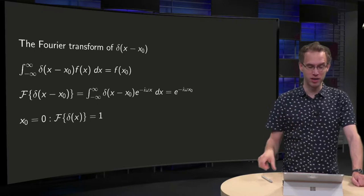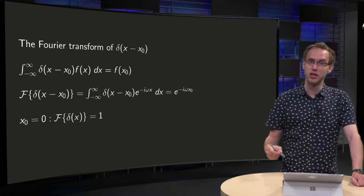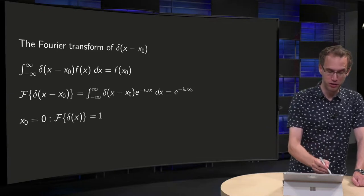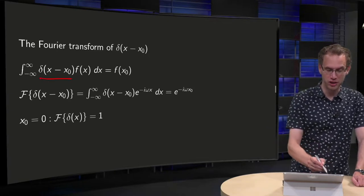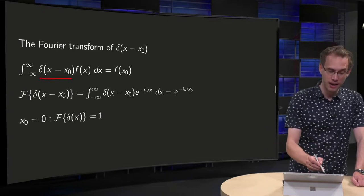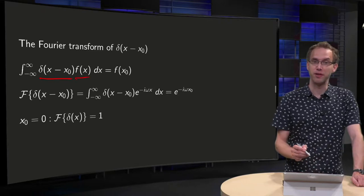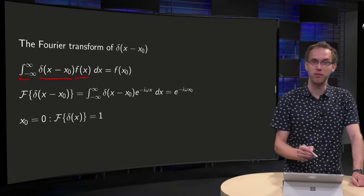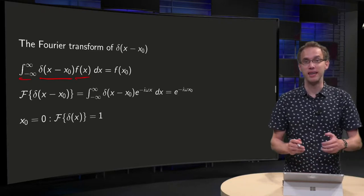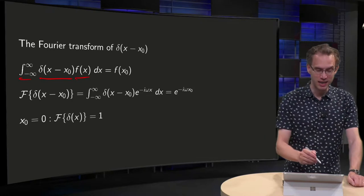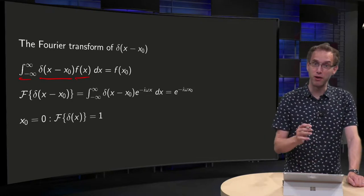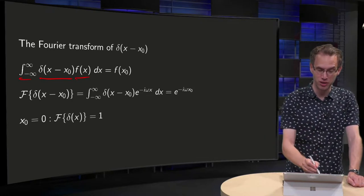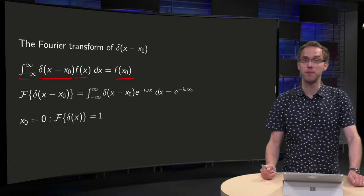Let's start with the delta function. The delta function is a function such that if you integrate some f from minus infinity to infinity, the delta function picks out exactly the value of f at x₀, so that equals f(x₀).